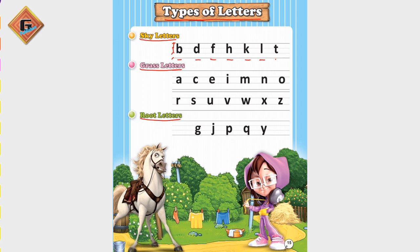One thing you have to remember is that the capital letters all use the first three lines. We don't call them root letters, sky letters, or grass letters. This division is just for small letters.